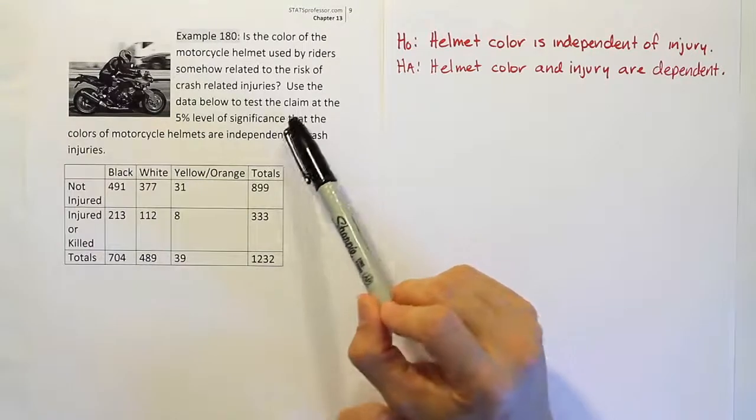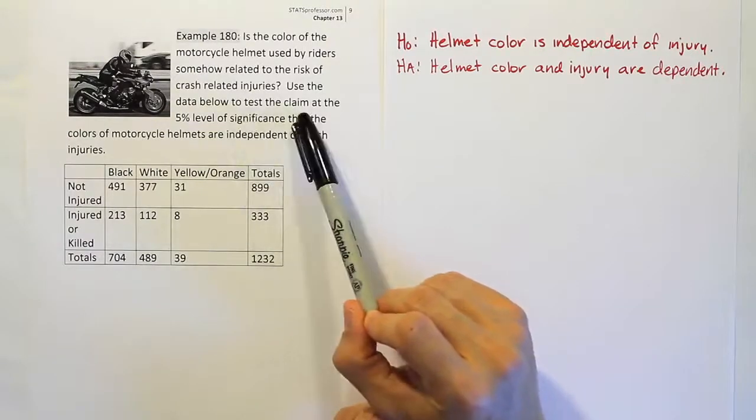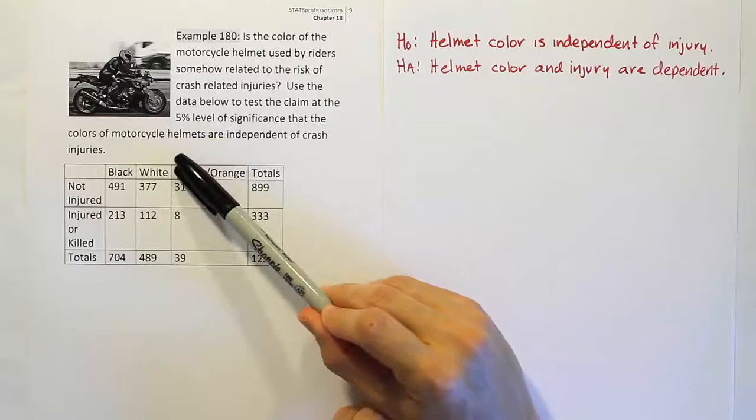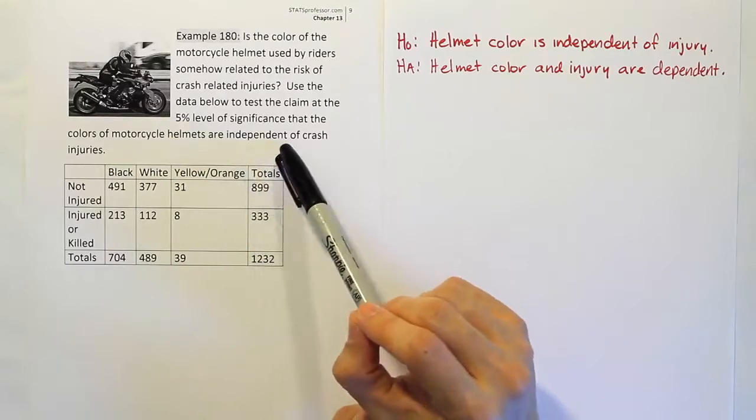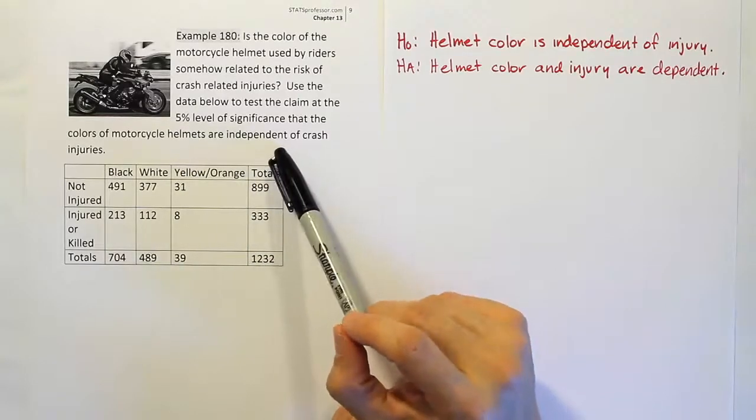It's clear based on this phrase 'test the claim' that we're doing a hypothesis test. Since they're asking us to see if two categories are independent, it's the chi-squared test for independence.